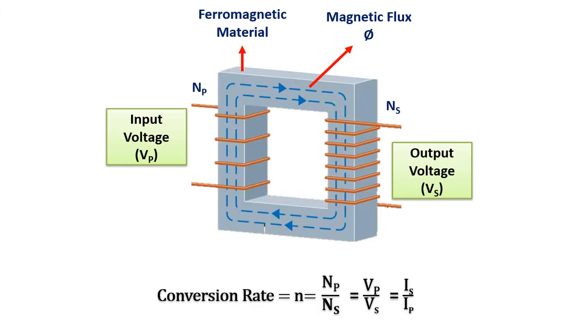If we consider the transformer as an ideal transformer without any loss, the ratio of the primary winding to the secondary winding is equal to the ratio of the primary voltage to the secondary voltage. From here, we can see that the number of windings is directly proportional to the voltage value. At the same time, this ratio will be equal to the ratio of the secondary current to the primary current. In other words, the voltage values and the current value are inversely proportional.